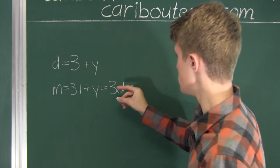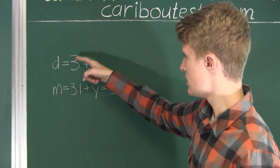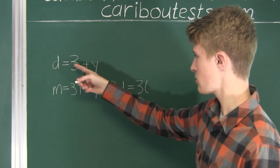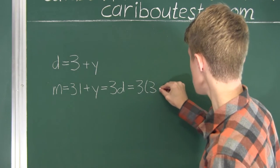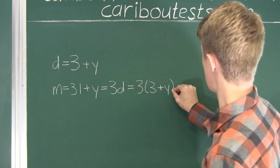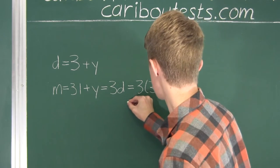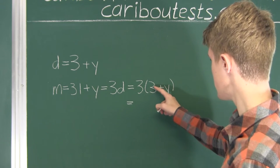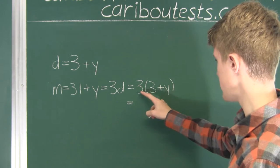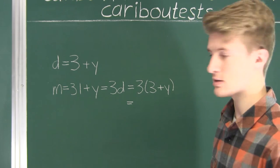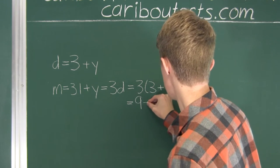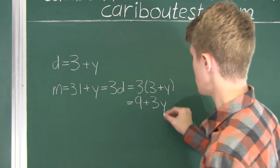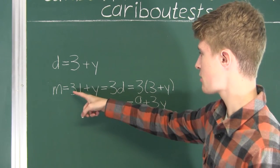And now, what we can do is we will just multiply this by 3. So we have 3 times, and then in brackets we have the 3 plus Y. By using the distributive law, we can do 3 times 3 plus 3 times Y. So 3 times 3 is 9, plus 3 times Y is 3Y. And now we will bring down the 31 plus Y.